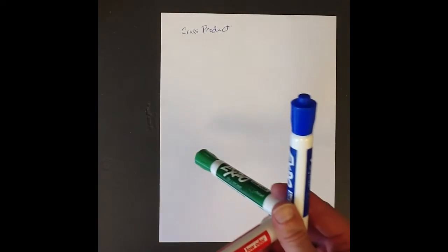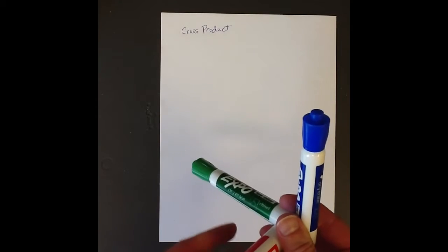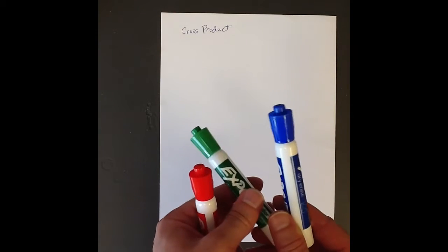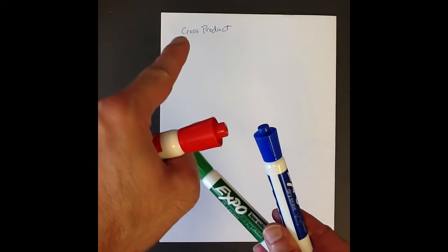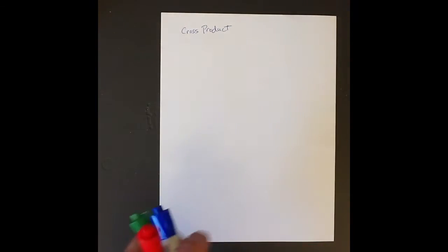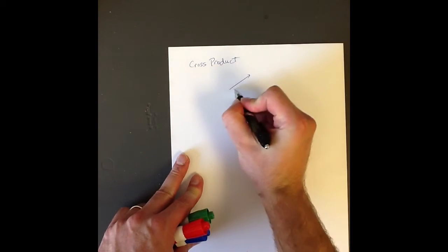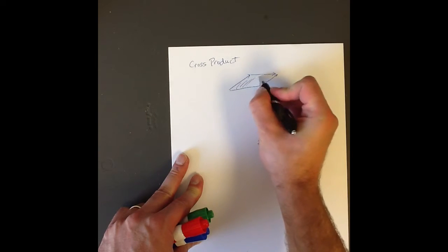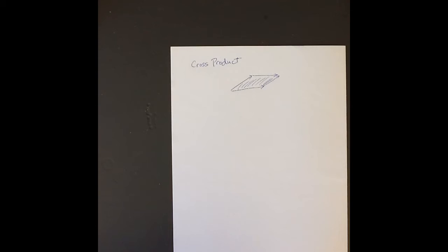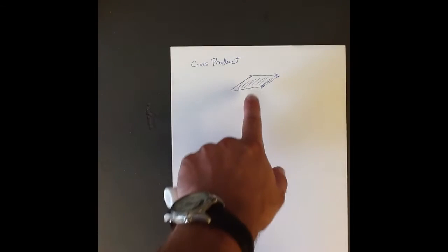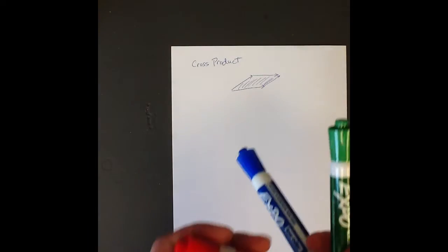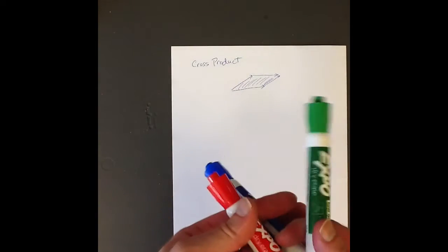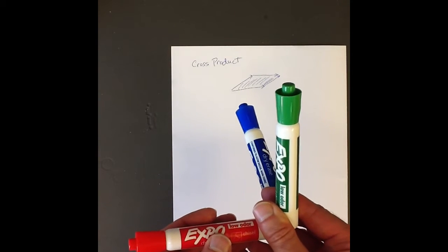So which one do we want to call the cross product of the blue and the green vectors? Let's narrow it down. Let's say that the length of the red vector — the cross product vector — is equal to the area of the parallelogram formed by the blue and the green vectors. We can form the parallelogram from them, calculate the area, and say that the cross product vector has to have the same length as the area of that parallelogram. But that's still not enough to tell us exactly which vector the cross product vector is.